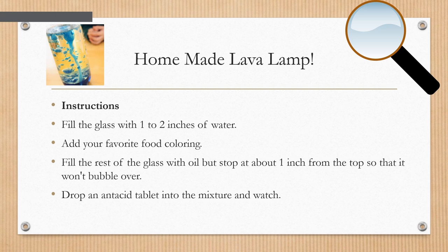Instructions: First, you have to fill the glass or the bottle with one to two inches of water. You will add your food coloring, make sure to stir. Then you will fill the rest of the glass with oil, but stop at about one inch from the top so it won't bubble over. And last, you will drop the antacid tablet into the mixture and watch what happens next.